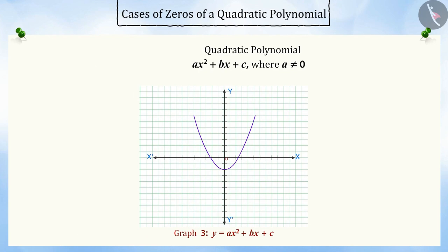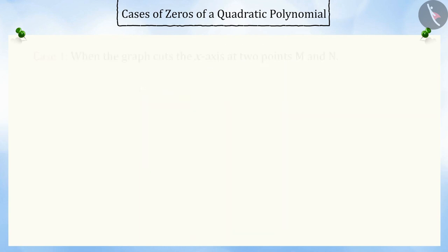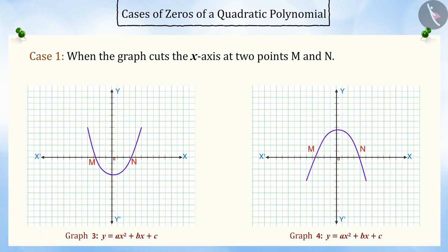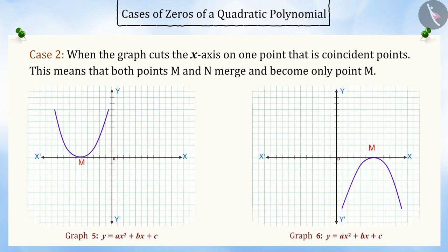Observing the graph of ax² + bx + c, there are three cases. Case 1: when the graph cuts the x-axis at two points m and n. In this case, the x-coordinates of points m and n are the two zeros of the quadratic polynomial ax² + bx + c. Case 2: when the graph cuts the x-axis at one point, i.e., coincident points. This means both points m and n coincide and become only point m, so the x-coordinate of point m is the only zero of ax² + bx + c.